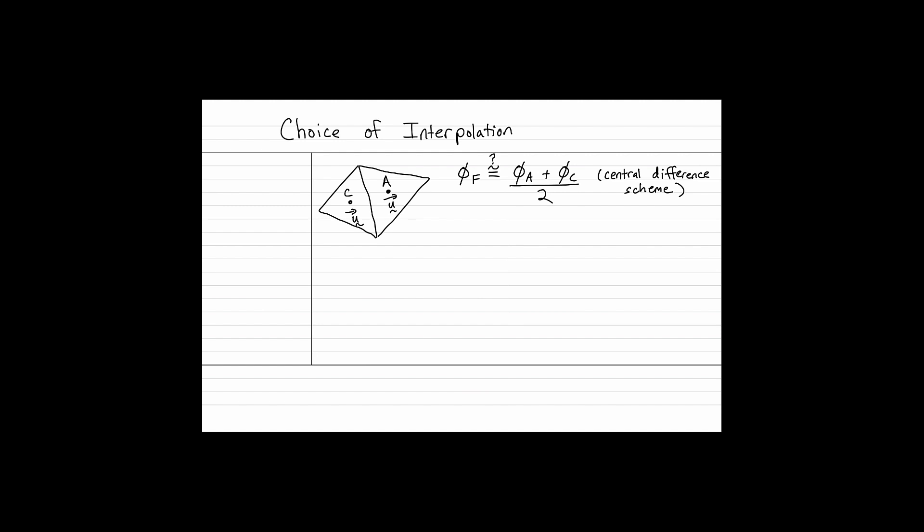And that's a pretty accurate scheme - that's actually a second order accurate scheme. So even if there's a parabolic distribution of φ between C and A, it'll be correct. It'll just miss anything third order or higher. So that's a second order accurate scheme and that's a pretty good one, but it turns out that scheme is often unstable.